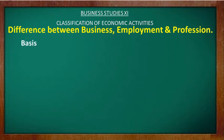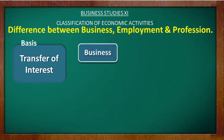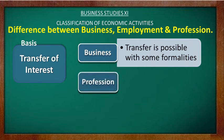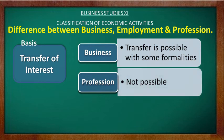The next difference is on the basis of transfer of interest. In business, transfer of interest is possible with some formalities — for example, a business run by a father can be transferred to his son. In profession, it is not possible to transfer interest — a doctor cannot transfer their certificate to their son; to become a doctor one must be a member of the Medical Council of India. In employment, it is similarly not possible to transfer interest.